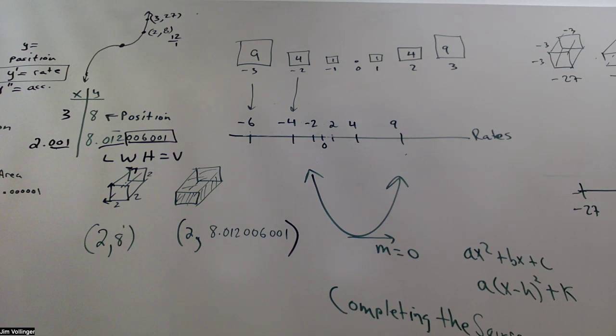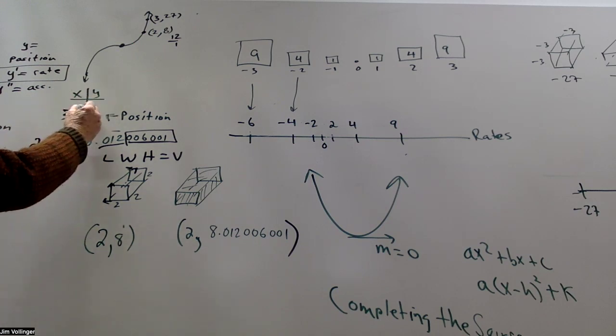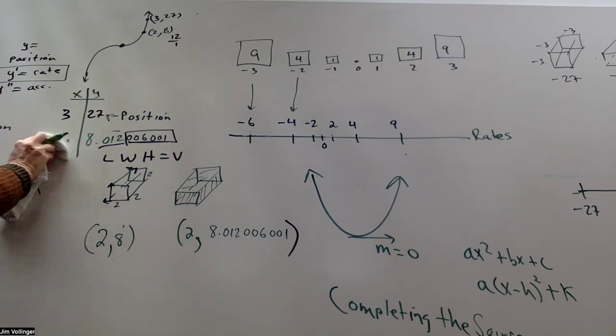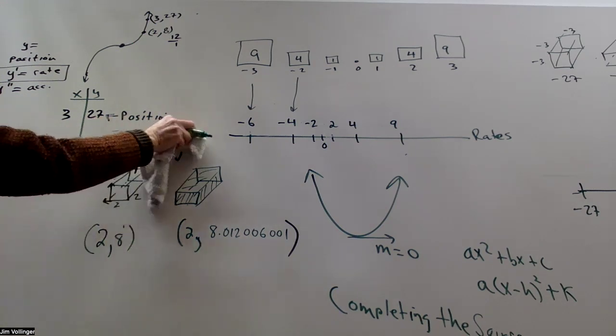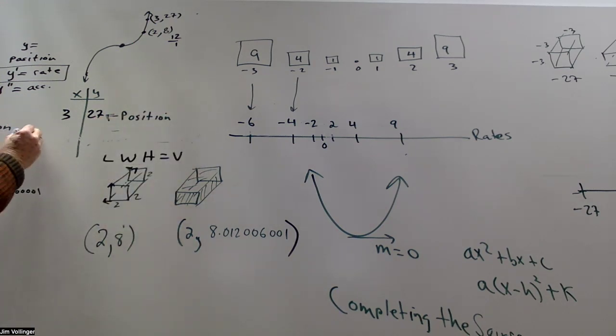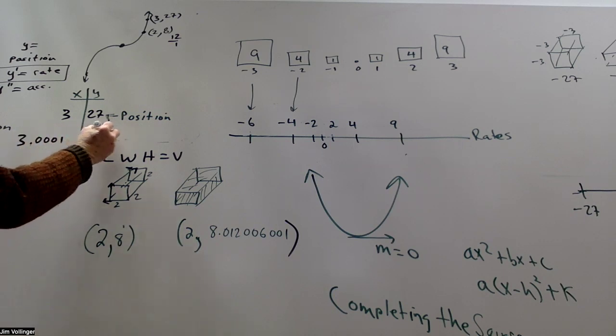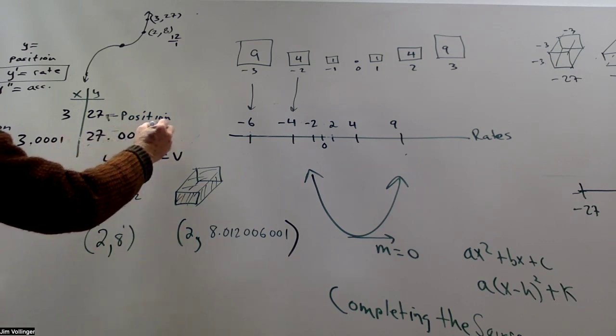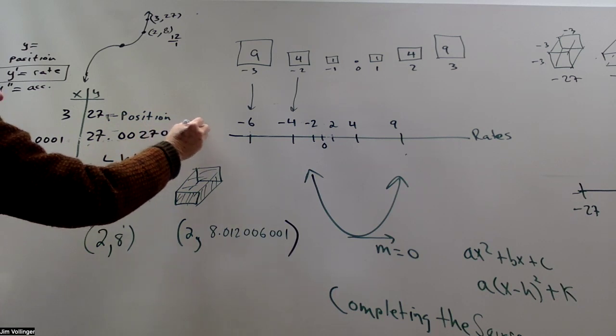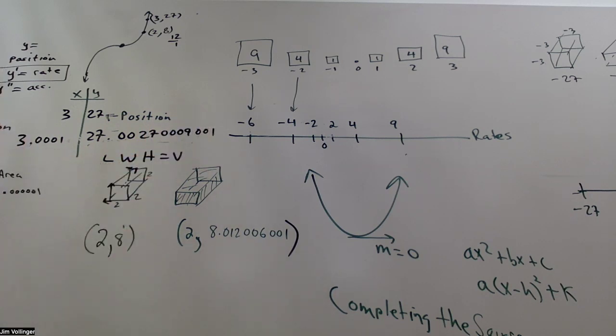Then let's look at what happens when I'm at 3. So 3-dimensional, 3 times 3 times 3 is 27. And why don't we go one more decimal place? 3.0001 is going to get me 27.009001. I hope I got that right.